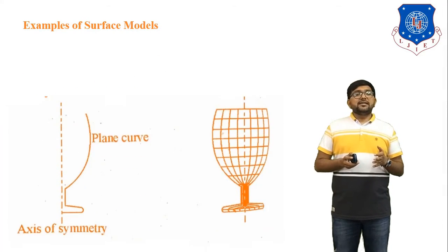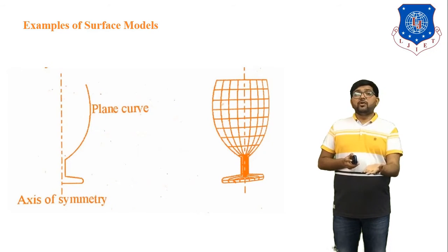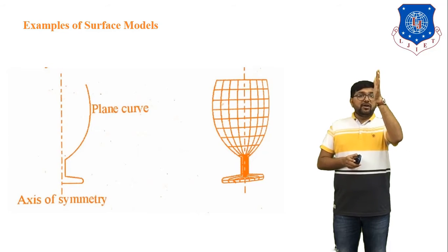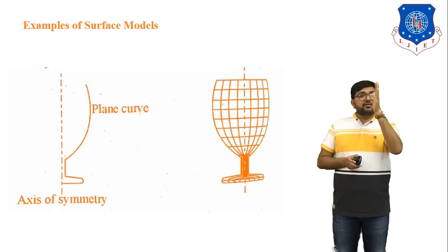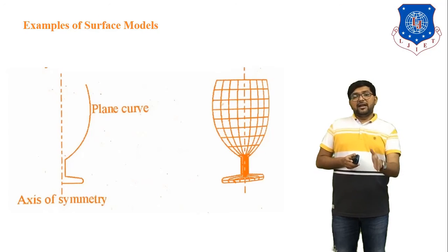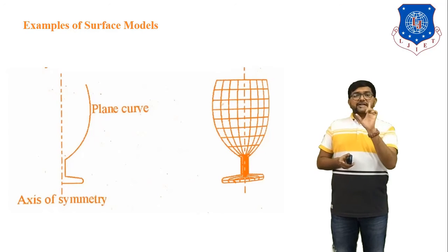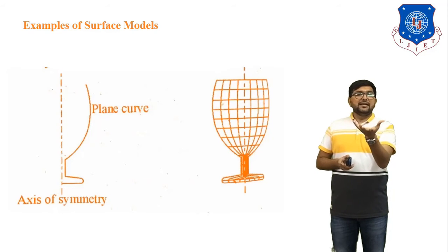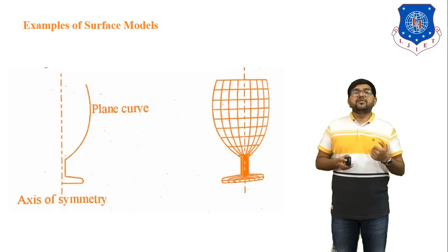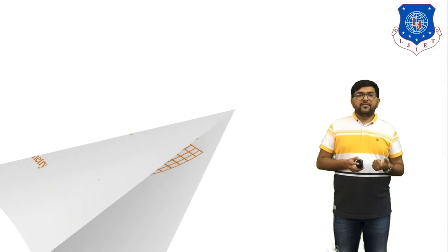This is a good example of surface modeling — it is a surface of revolution. We have just one cross-section of the object, and we rotate this cross-section at 360 degrees to generate a cup shape. This is the example of surface modeling.